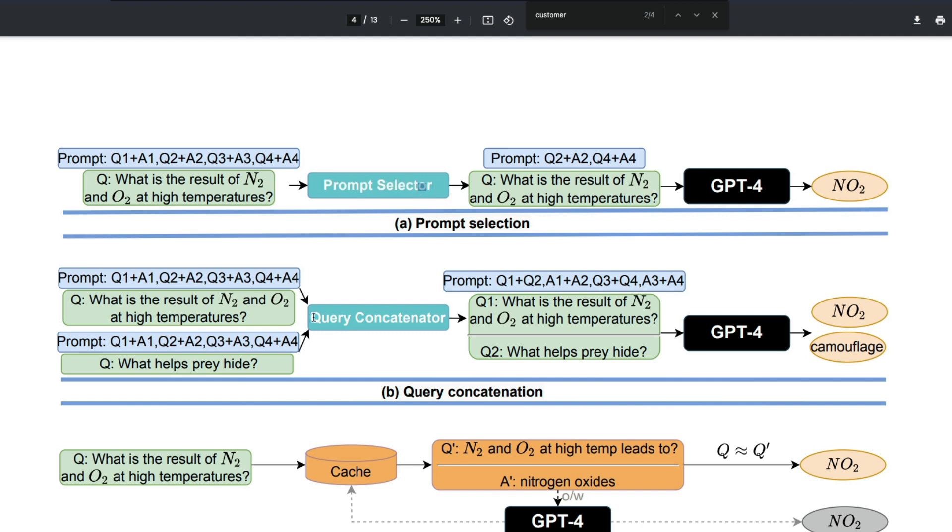The prompt selector selects the most important prompt while trying to keep the cost down so that your number of input tokens go down without compromising on the accuracy. The other aspect is query concatenation. Sometimes it's more expensive for you to ask two different questions to an LLM with the same context. Why not combine those two different prompts and use a query concatenator? Set the context with the LLM API once and ask these two different questions in the same input prompt. That can help you with the number of calls and the latency.